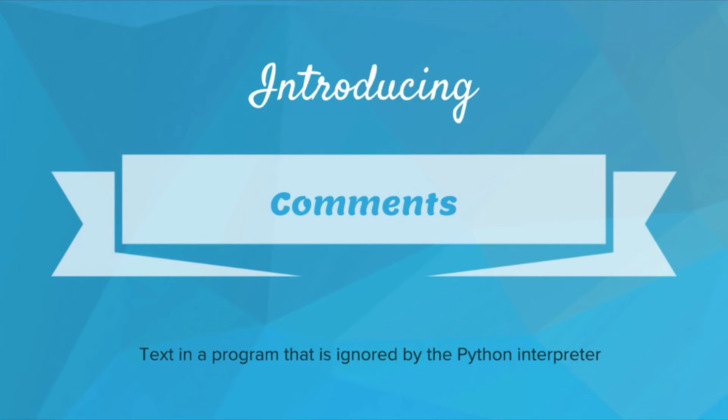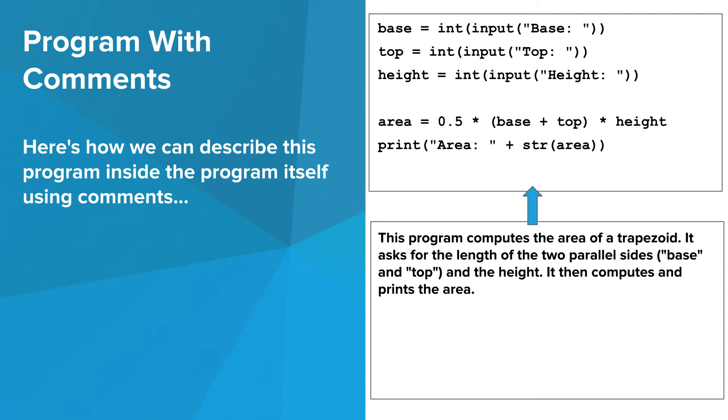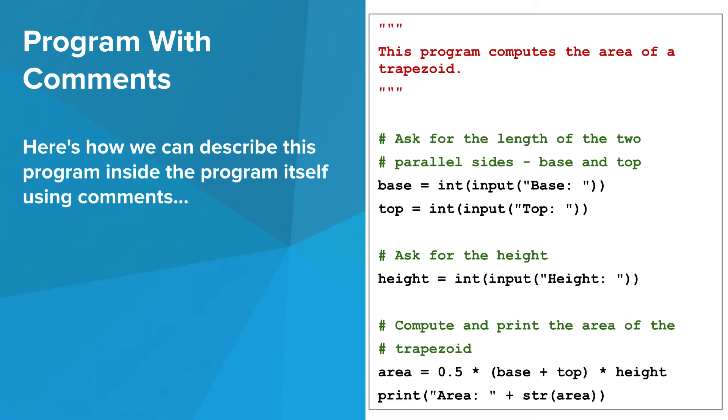A comment is text in a program that is ignored by the Python interpreter. Let's take the description from the last example and inject it into the program itself using comments. When we do that, it looks like this. There are a couple of types of comments here, the red one and the green ones, and I'll explain what they are in a second.